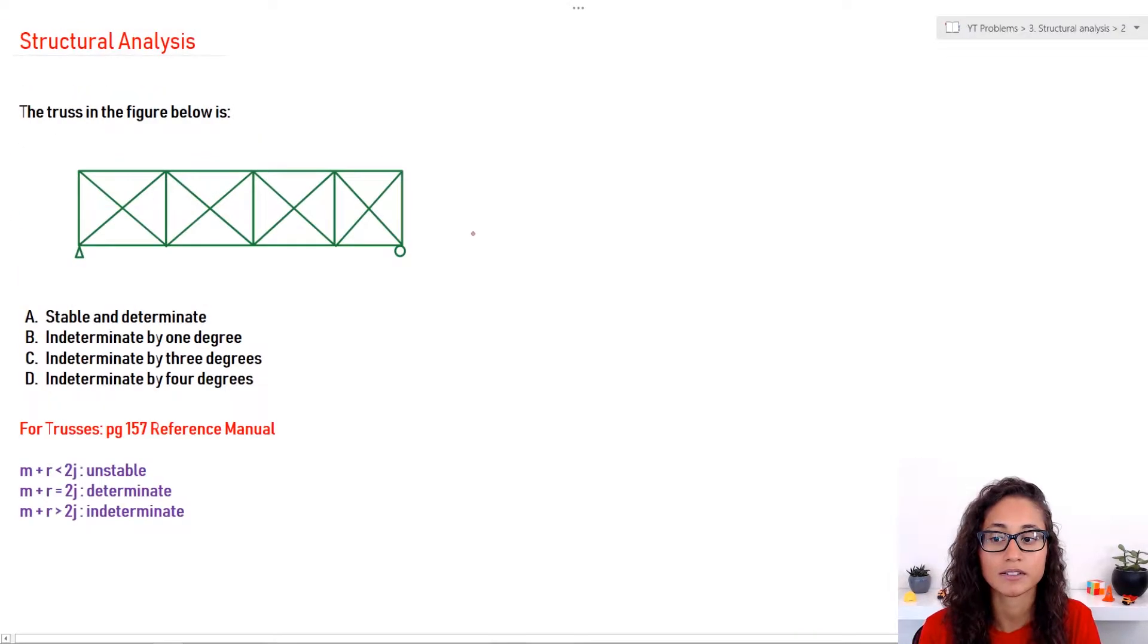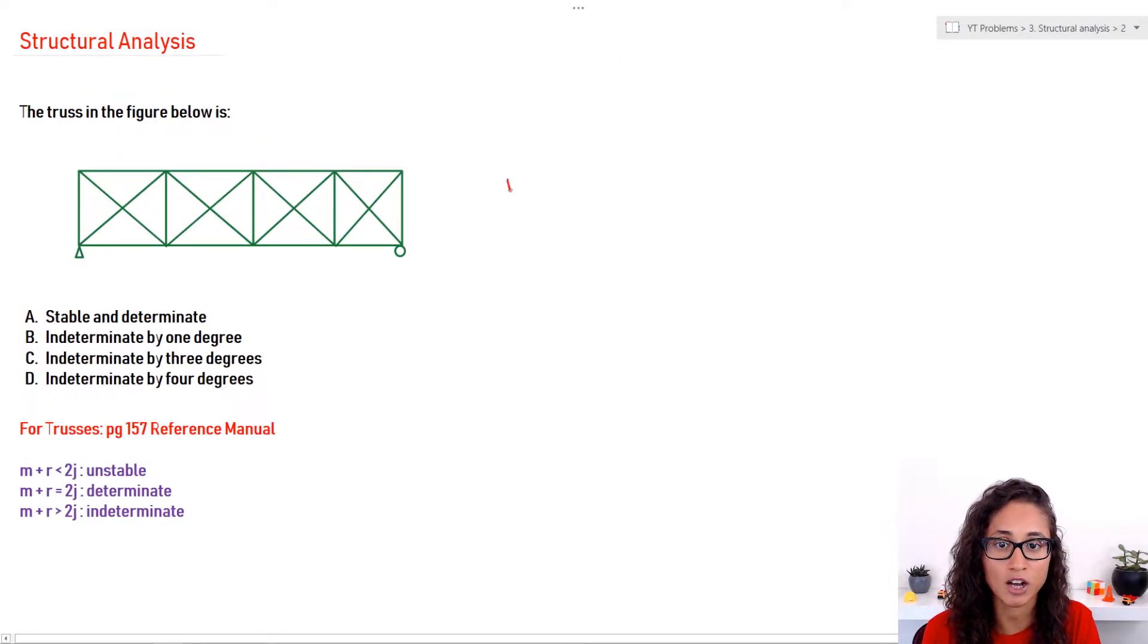So let's start calculating this. Okay, so if you guys calculate how many members we have, you should get about 21. Reactions, we have three, because remember pin has two, and then roller has one. And then for the joints, we have about 10.